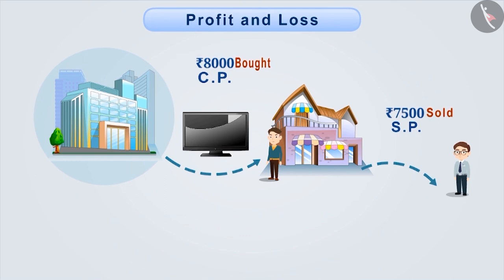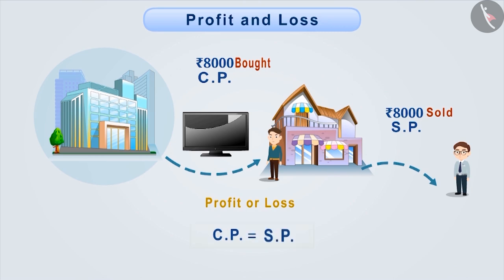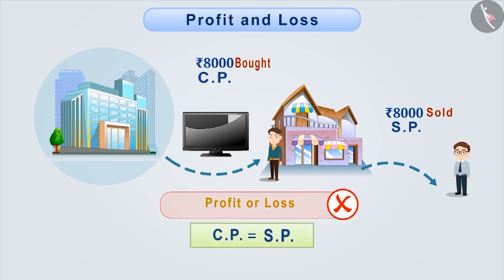Now, suppose the shopkeeper sells the television purchased for Rs. 8000 at the price of Rs. 8000 only. Then, is there a profit or a loss for him? Think for a while. Absolutely correct. Since both the cost price and the selling price are equal, there is neither a profit nor a loss.